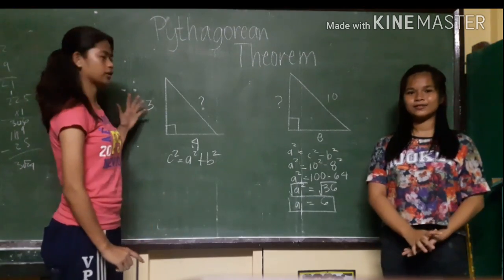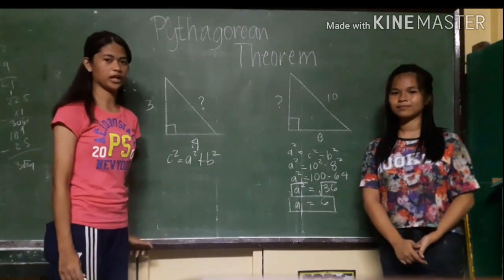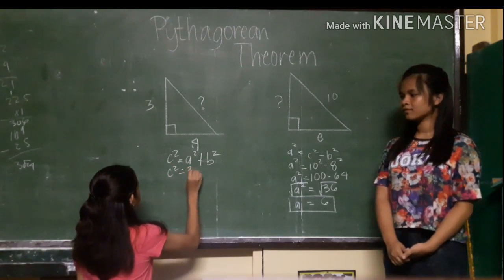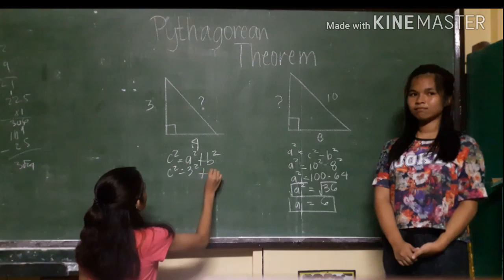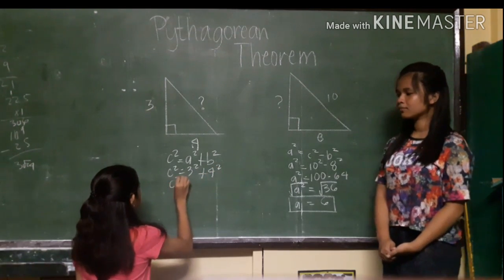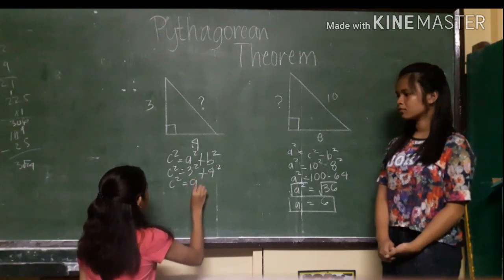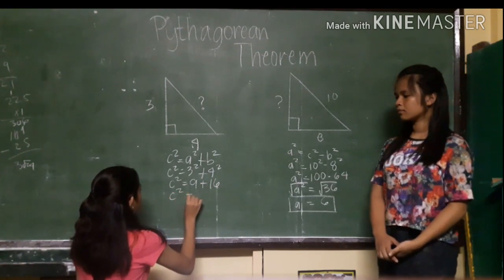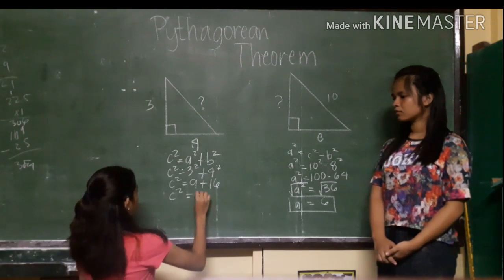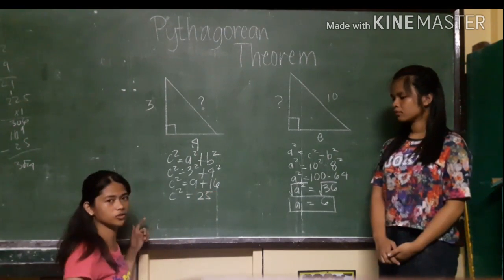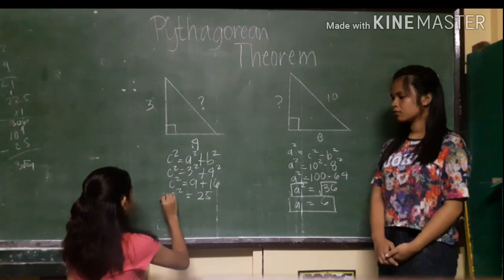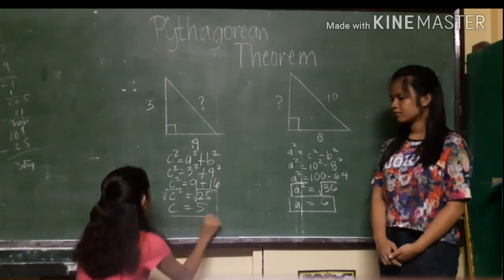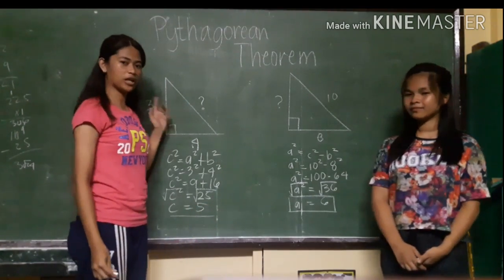And now let's try to find the hypotenuse of this triangle. C squared is equal to 3 squared plus 4 squared. C squared is equal to 9 plus 16, which equals 25. And to find c by itself, we take the square root of both sides. C is equal to 5. And the hypotenuse of this triangle is 5.